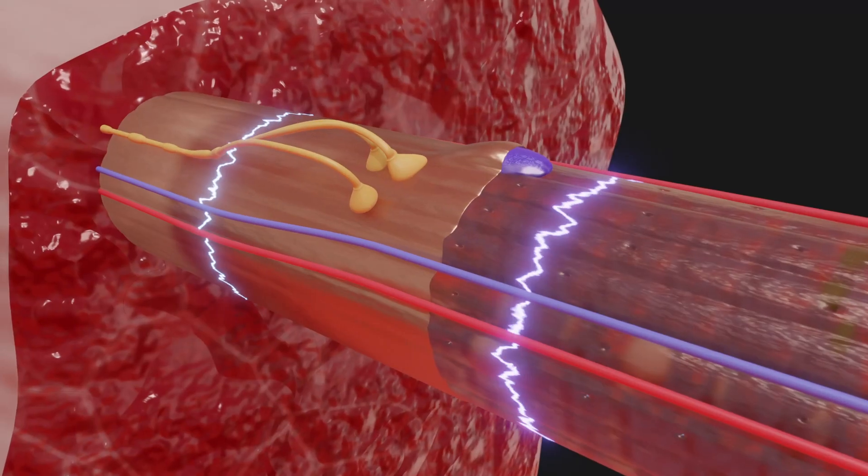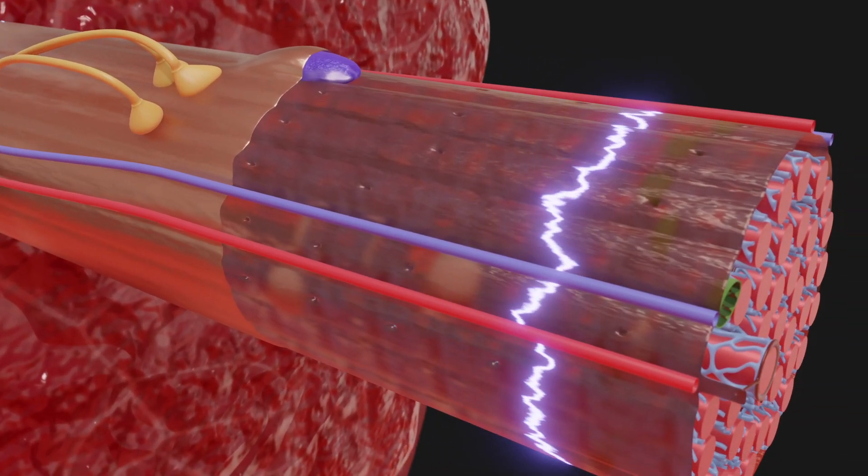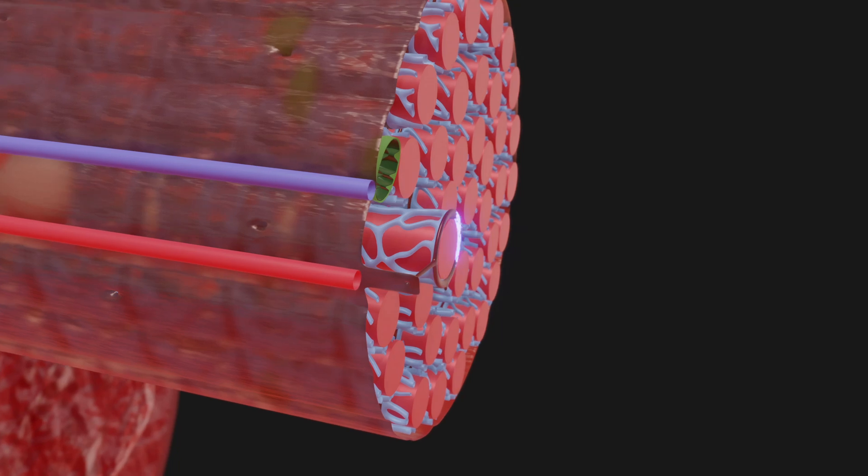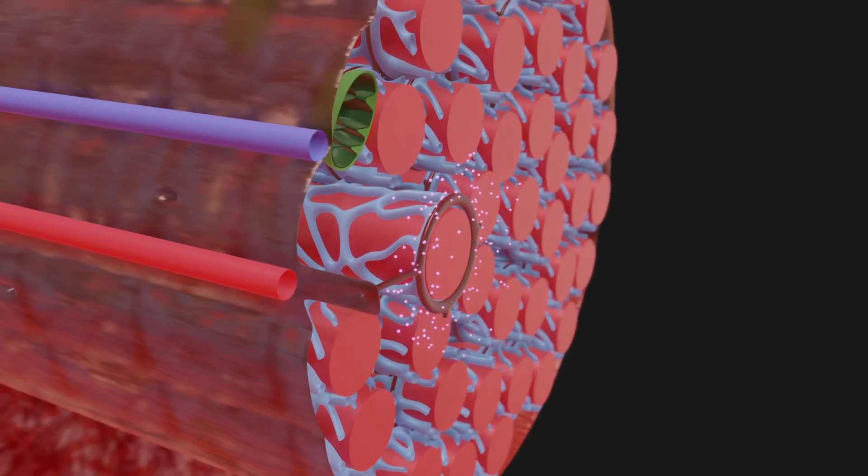The impulse reaches the sarcoplasmic reticulum via punctures in the cell membrane. The cell organelle then releases calcium ions.